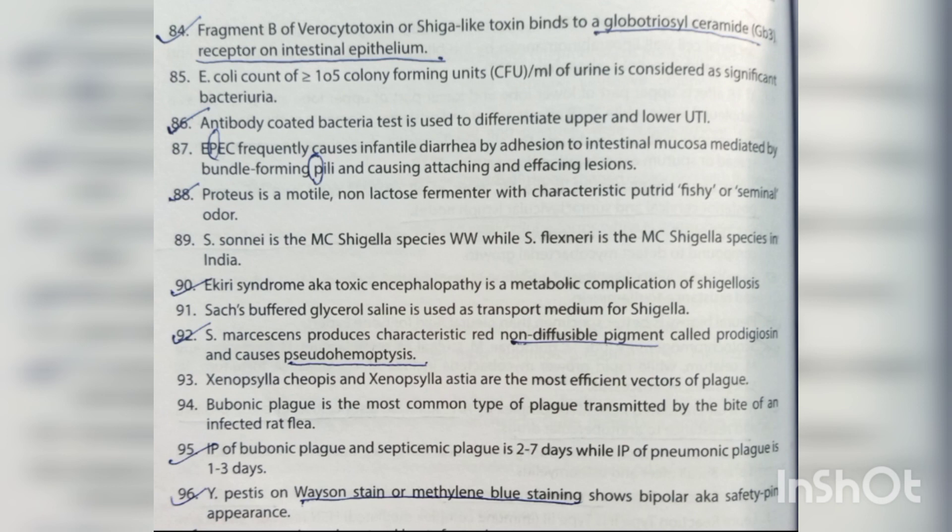Shigella sonnei is the most common Shigella species in India. Ekiri syndrome (toxic encephalopathy) is a metabolic complication of shigellosis. Sach's buffered glycerol saline is used as transport medium for Shigella. Serratia marcescens produces a characteristic red non-diffusable pigment called prodigiosin and causes pseudohemoptysis. Xenopsylla cheopis and Xenopsylla astia are the most effective vectors of plague. Bubonic plague is the most common type, transmitted by the bite of an infected rat flea.